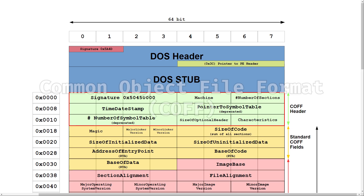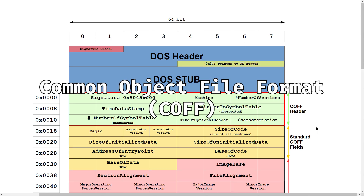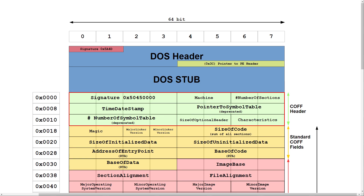Then there is the COFF, or Common Object File Format header, which is a format for executables introduced for Unix systems. The COFF section stores a variety of information like the type of machine — also known as architecture — a timestamp, and even information about the sections, though it is not a section table.